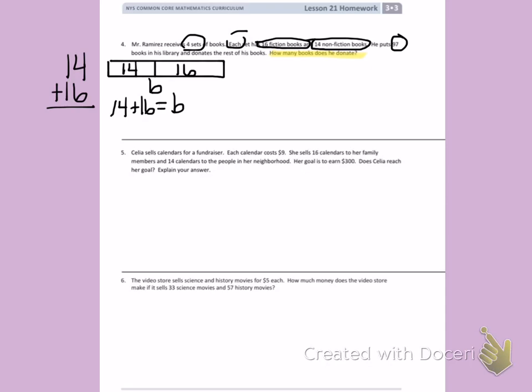So I will add 14 plus 16 to equal B. 4 plus 6 is 10. 1 plus 1 plus 1 is 3. So in one set, Mr. Ramirez has 30 books.